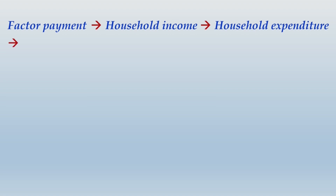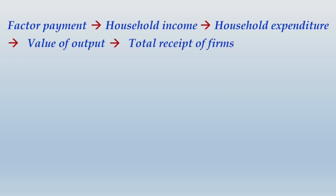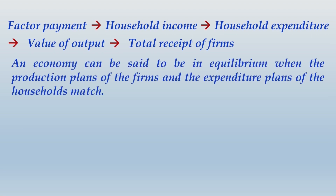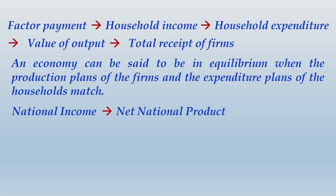Factor payment becomes income for the household, and household income becomes the source of expenditure. When households spend, they purchase goods and services — paying for the value of output produced by firms — and the money goes back to the firms as total receipts. An economy is in equilibrium when the production plans of firms and the expenditure plans of households match. National income is basically net national product at factor cost — NNP at factor cost.